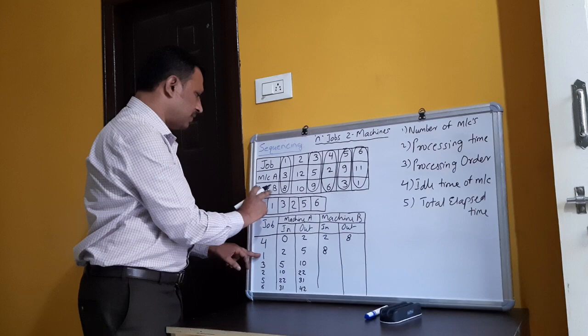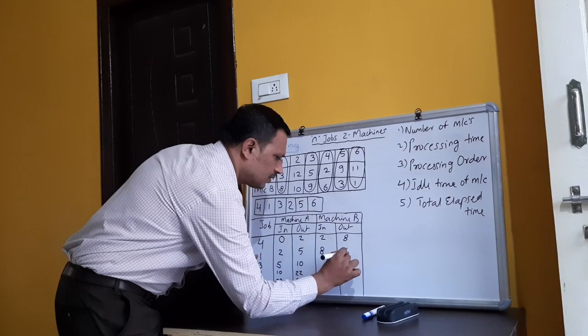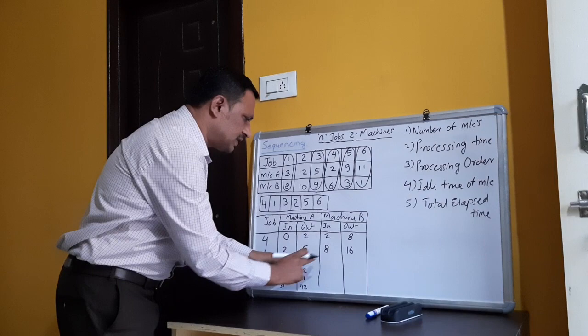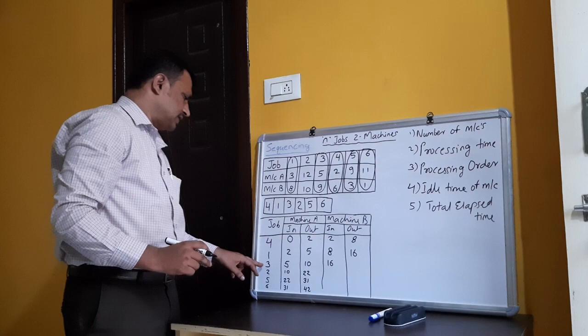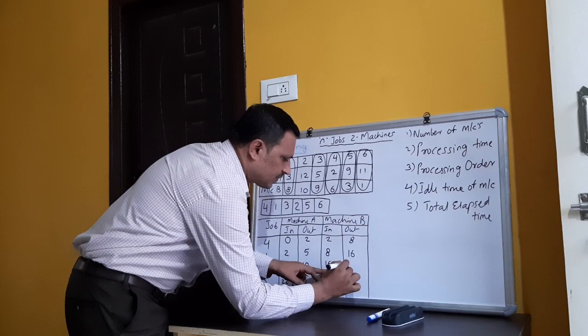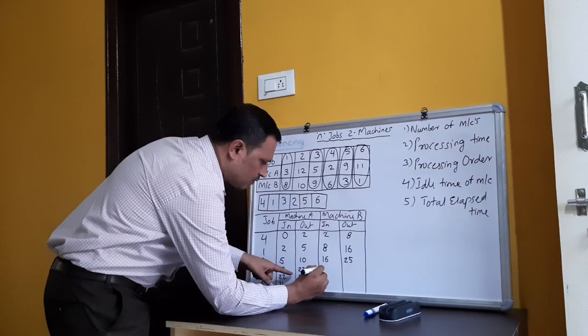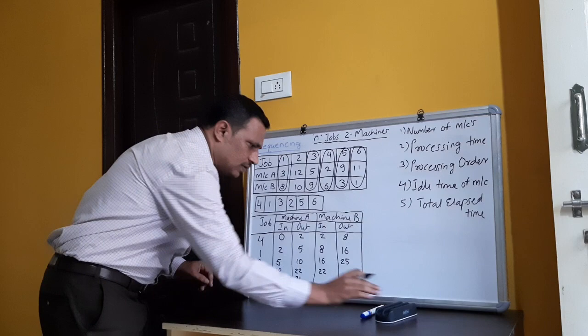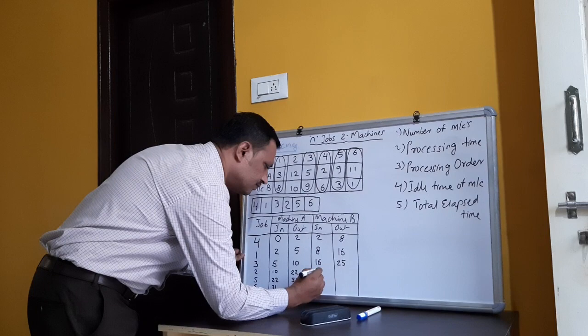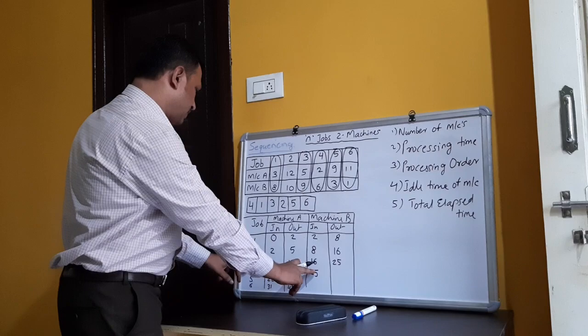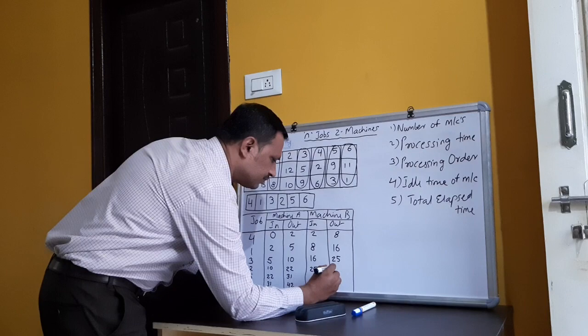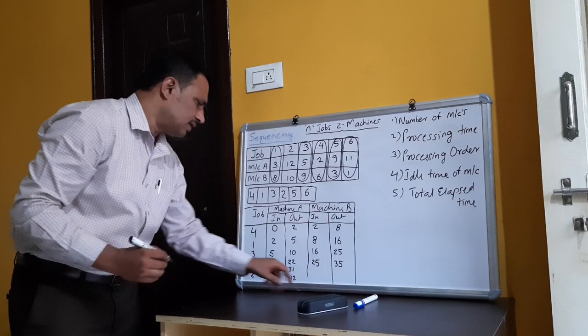For job one on machine B: in = 8 (since 8 > 5), processing time = 8, out = 16. For job three: in = 16 (since 16 > 10), processing time = 9, out = 25. For job two: in = 25 (since 25 > 22), processing time = 10, out = 35. For job five: in = 35 (since 35 > 31), processing time = 3, out = 38.